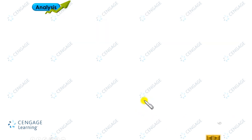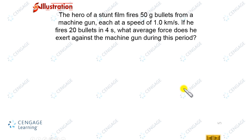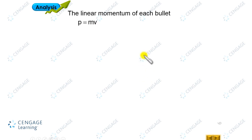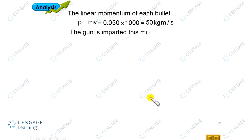First, let us calculate the linear momentum imparted by the gun on the bullet: mass multiplied by velocity. Mass of each bullet is 50 grams, equal to 0.050 kg, multiplied by speed 1 kilometer per second, that is 1000 meters per second — equal to 50 kg·m/s. That is the linear momentum provided by the gun on the bullet; that means the final linear momentum of the bullet is 50 kg·m/s.